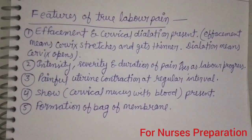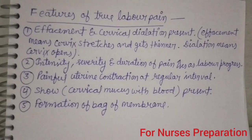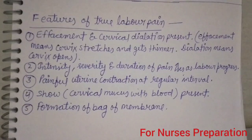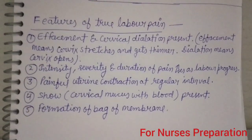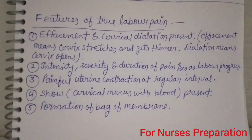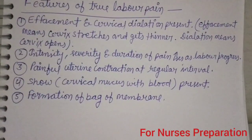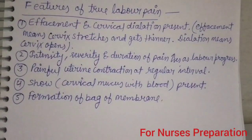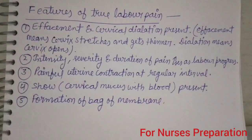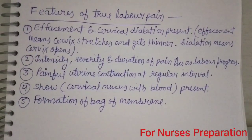The total duration of labour in a primigravida mother is up to 18 hours. In subsequent pregnancies, it will be around or less than 18 hours. Point number 2: Intensity, severity and duration of pain increases as labour progresses.